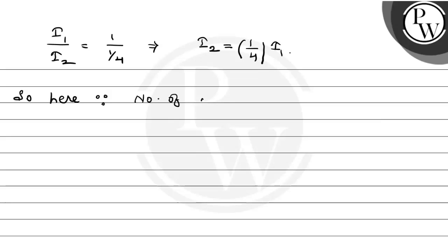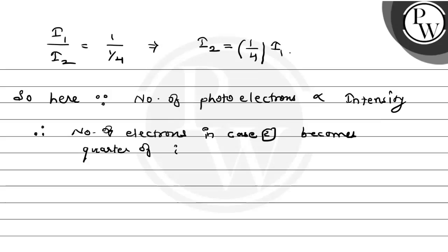So here since number of photo electrons, jitne bhi photo electrons hote hain emitted, number of electrons is always proportional to intensity, wo intensity ke proportional hote hain. Therefore yahan par number of electrons in second case, in case number 2, becomes quarter of initial condition.